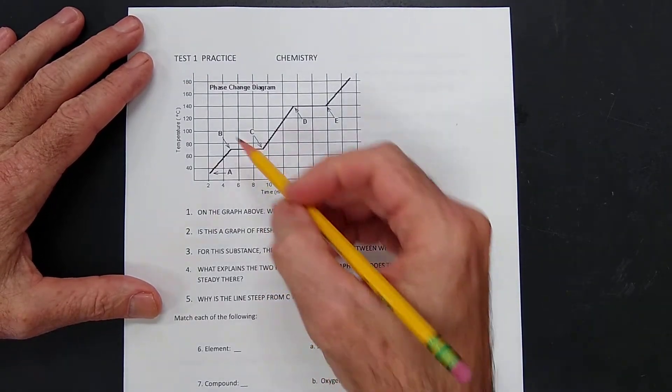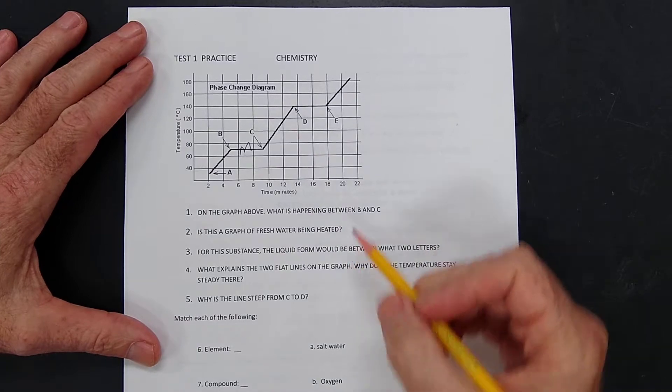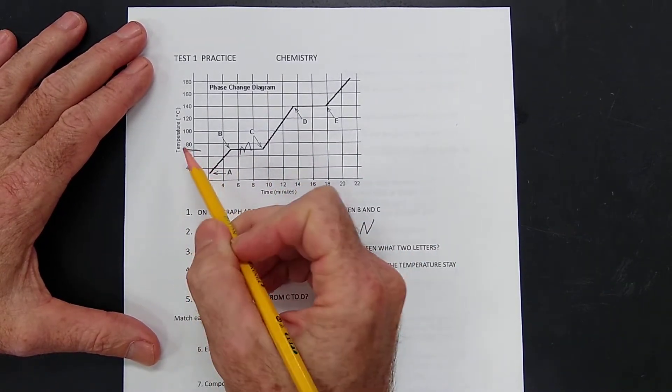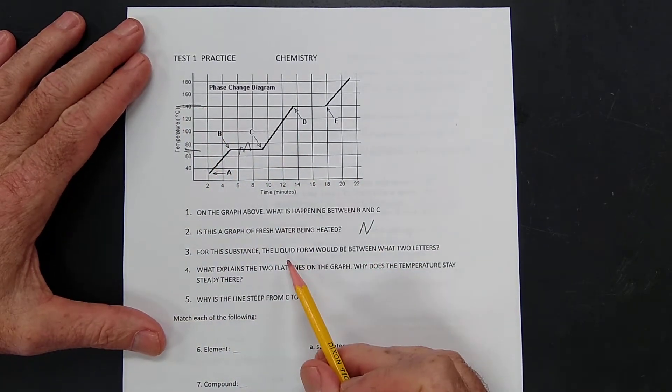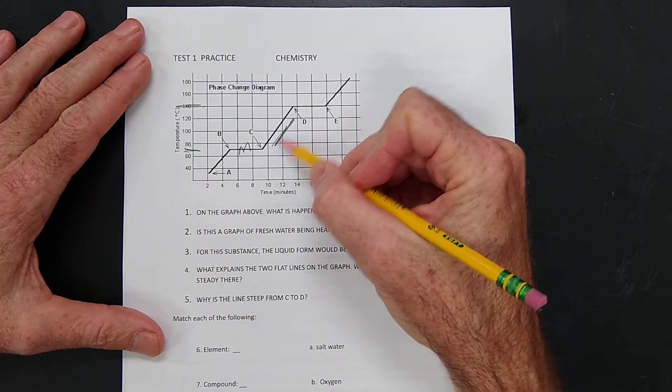What's happening between B and C? Right there, we have some melting going on. Is this fresh water? No, because the melting point is clearly here and the boiling point is up here. Where's the liquid on here? Between C and D, right there.